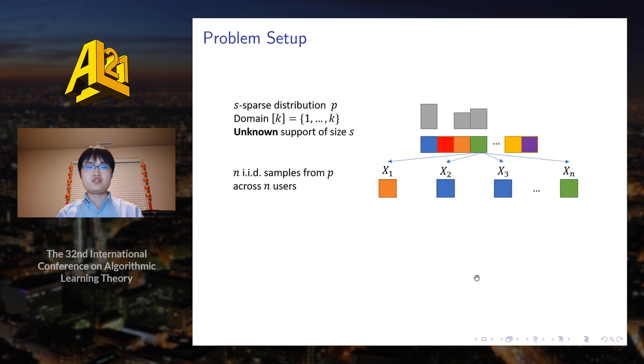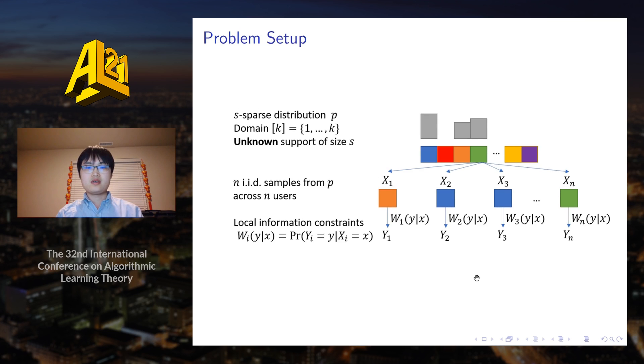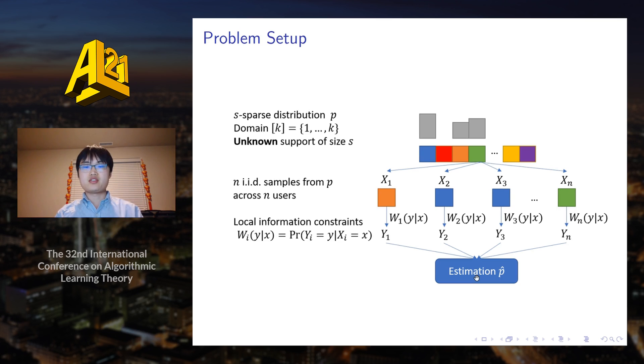There are a total of N users. Each of them has an IID sample from the underlying distribution P. Each user may send a message through a local information constraint, which is basically a randomized function or a channel defined by the conditional probability of sending a message Y given an input X. The messages are sent to a server which tries to learn the underlying distribution using the messages received.